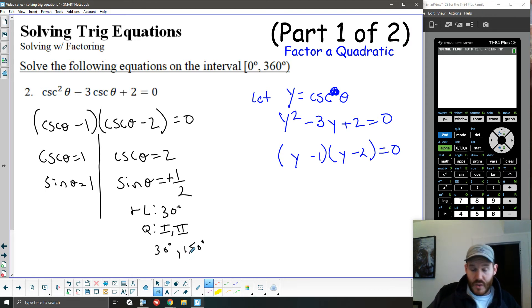So that would give me 30 degrees in quadrant 1 and 150 degrees in quadrant 2. To remember how to come up with these processes, you can go back to our previous video on solving basic trig equations, and I'll walk you through that.